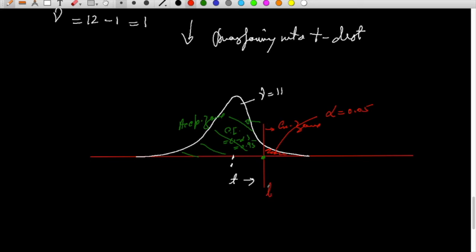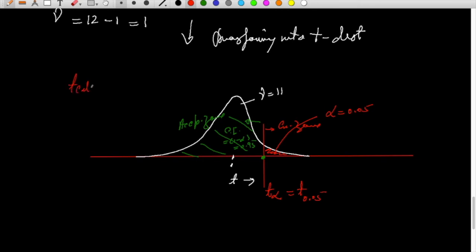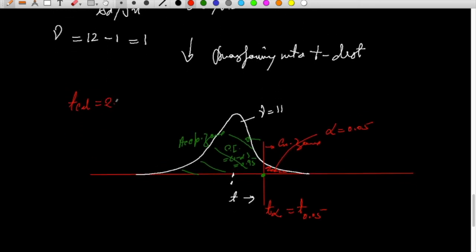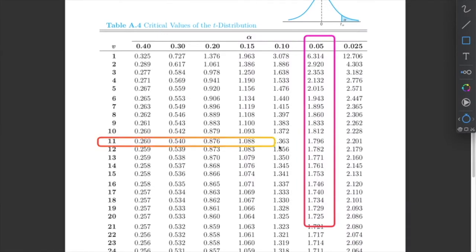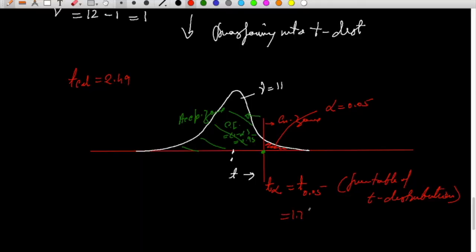We need the value of t-alpha. Now what is t-calculated? T-calculated is 2.49. This value we see from table of t-distribution for degrees of freedom 11. The value is 1.796. So this is 1.796.